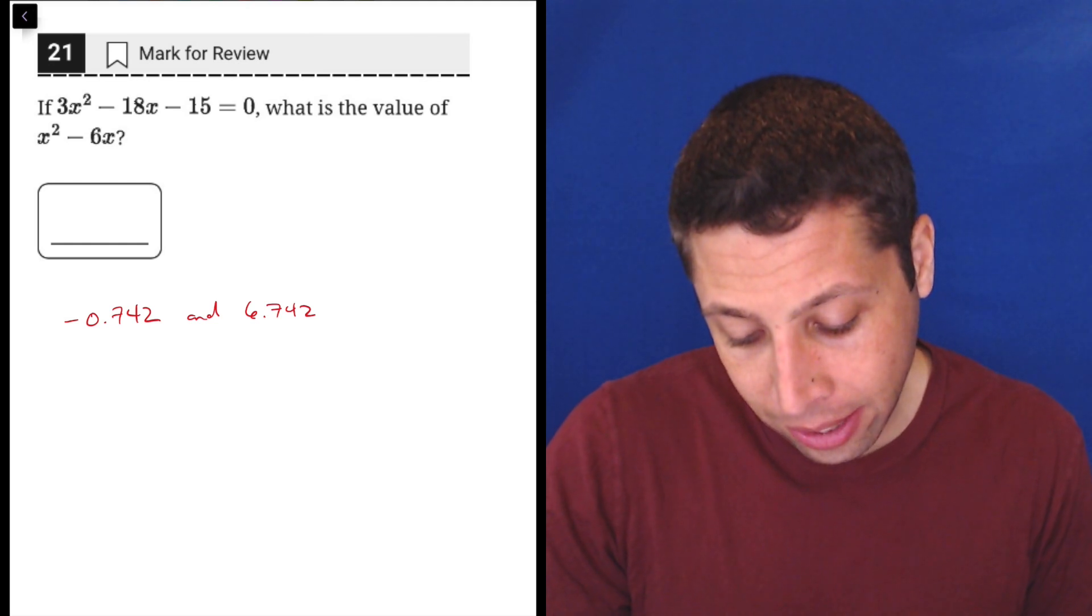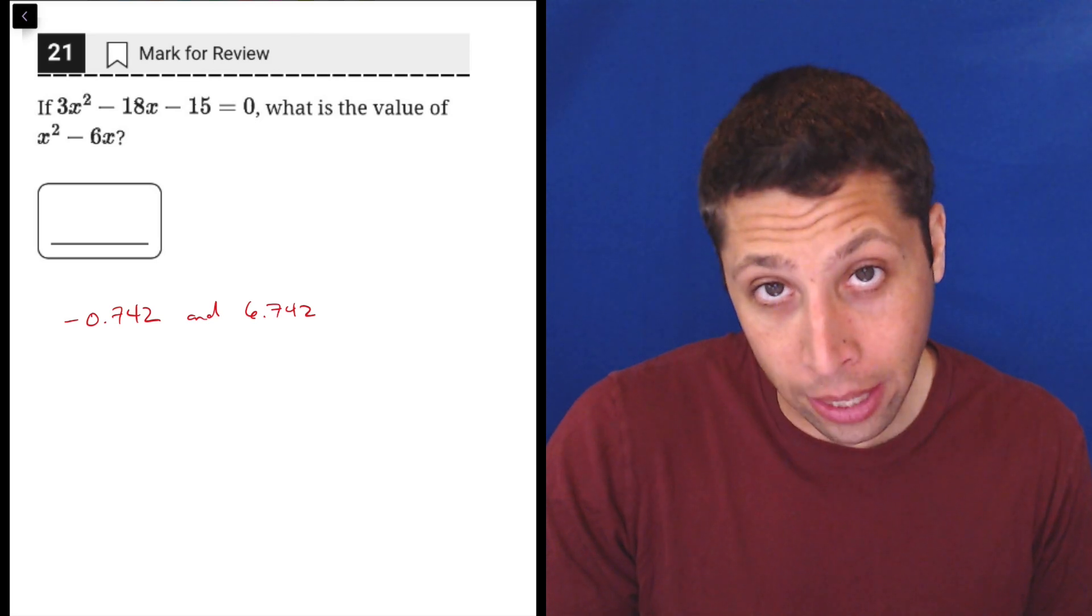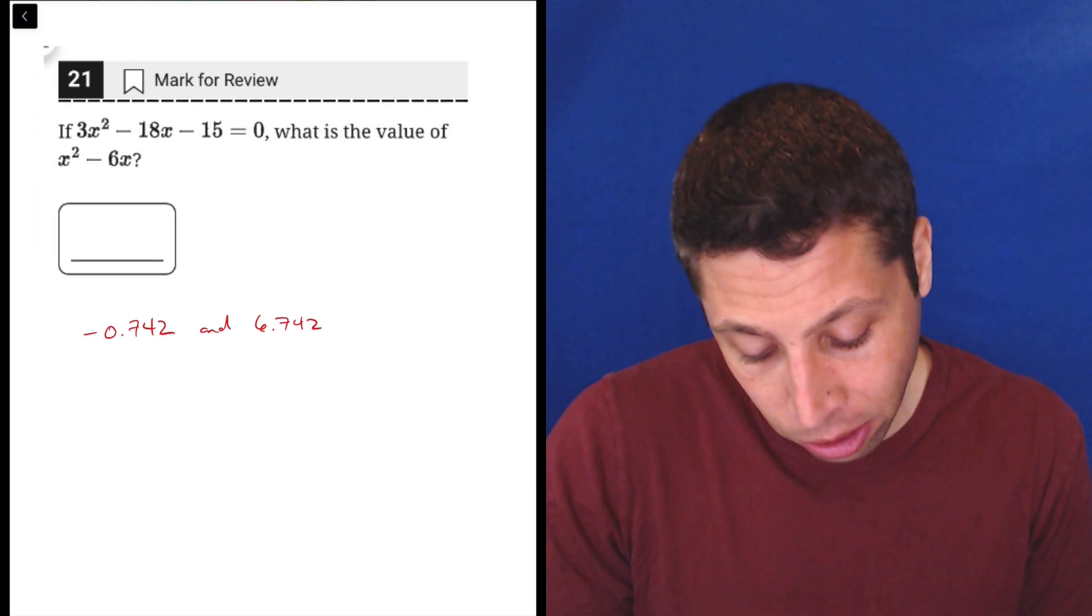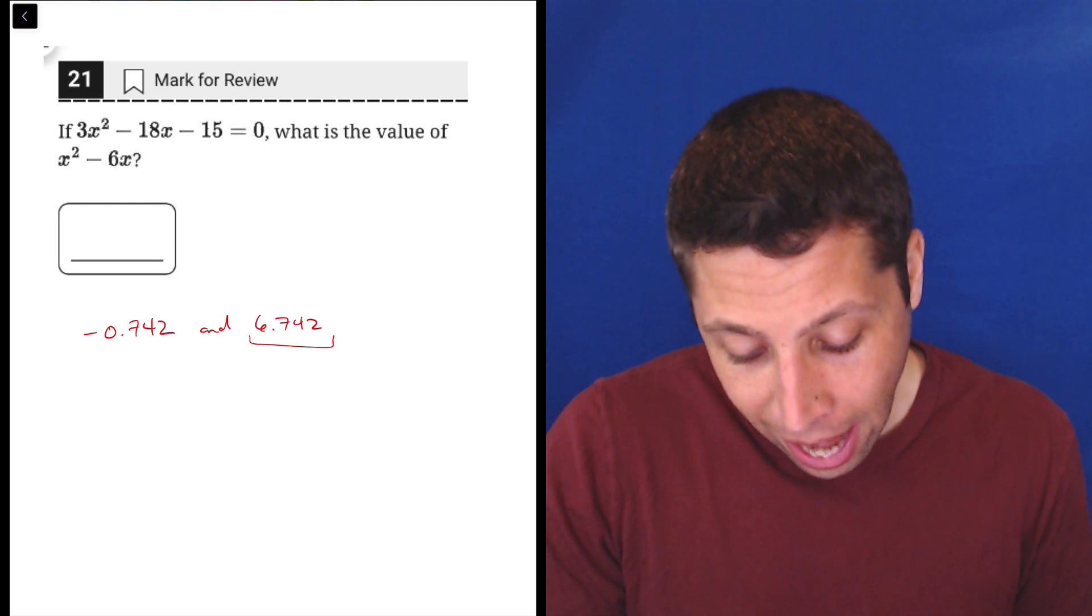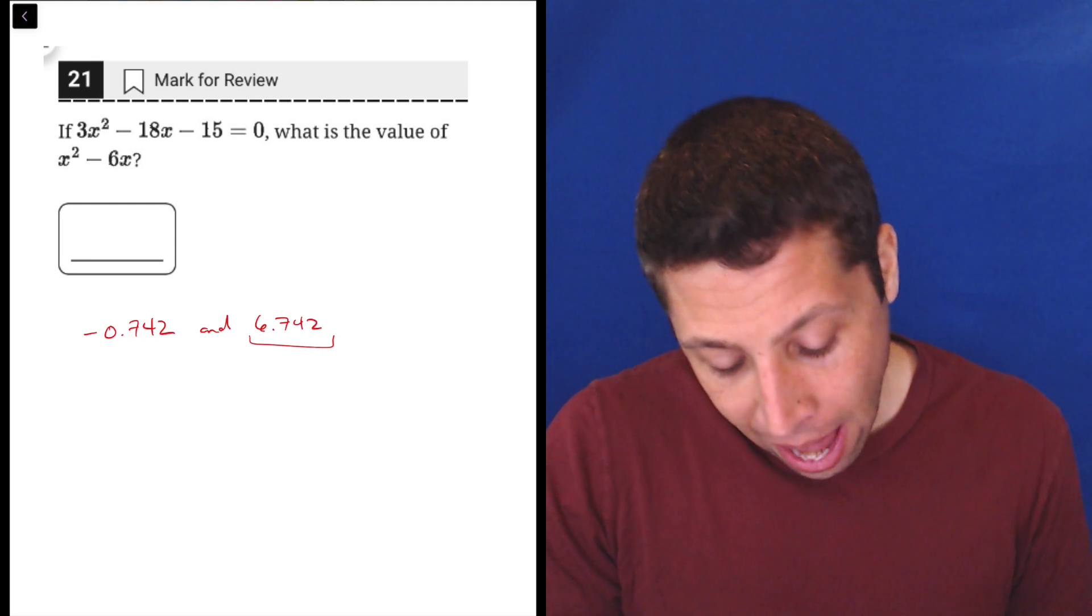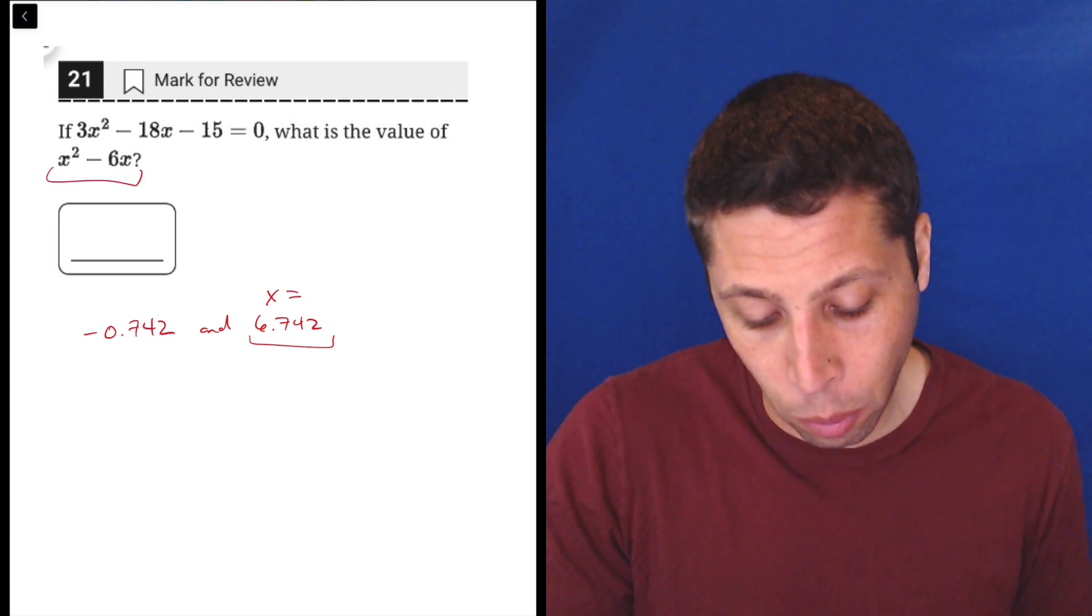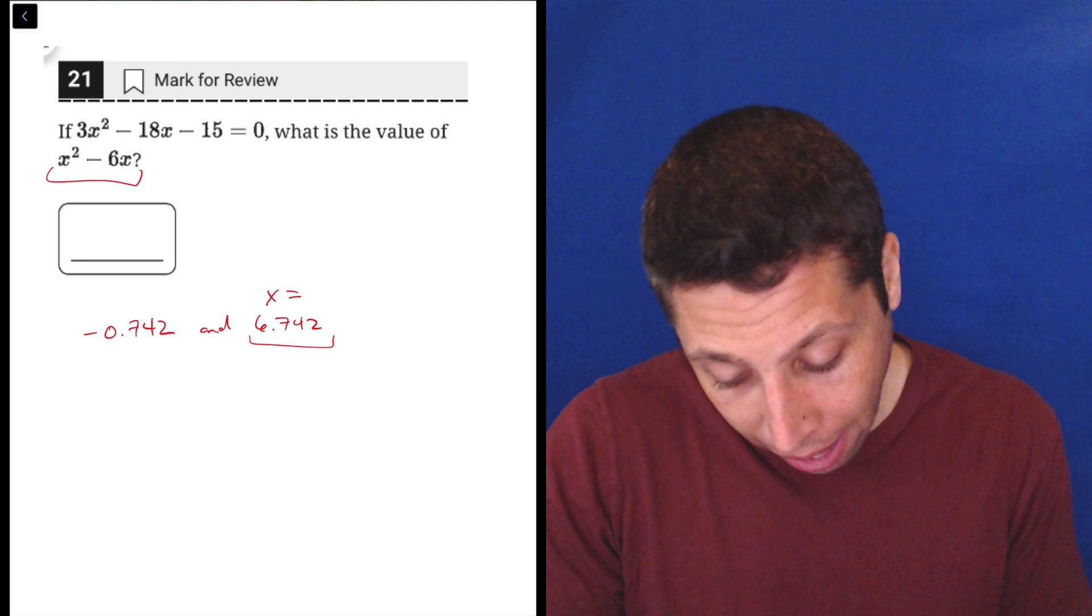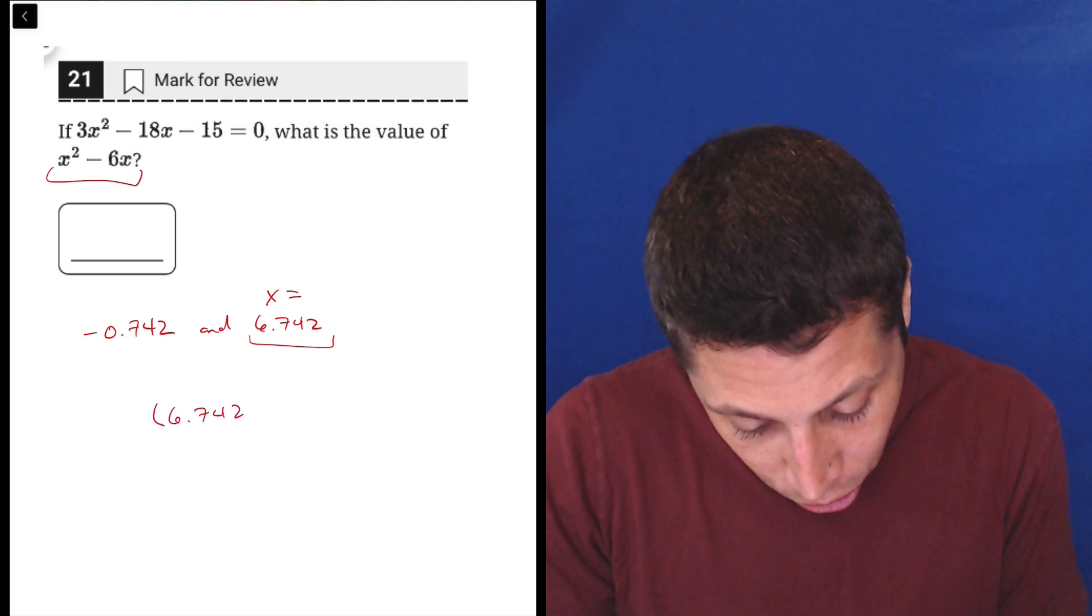So what is the value of x² - 6x? Well here we could take either one and plug it in. Basically what I'm going to do here is I'm going to stick with the positive number because why not, let's trust it. Now we just take that and that's going to be our value of x, and we plug that into x² - 6x and see what we get.